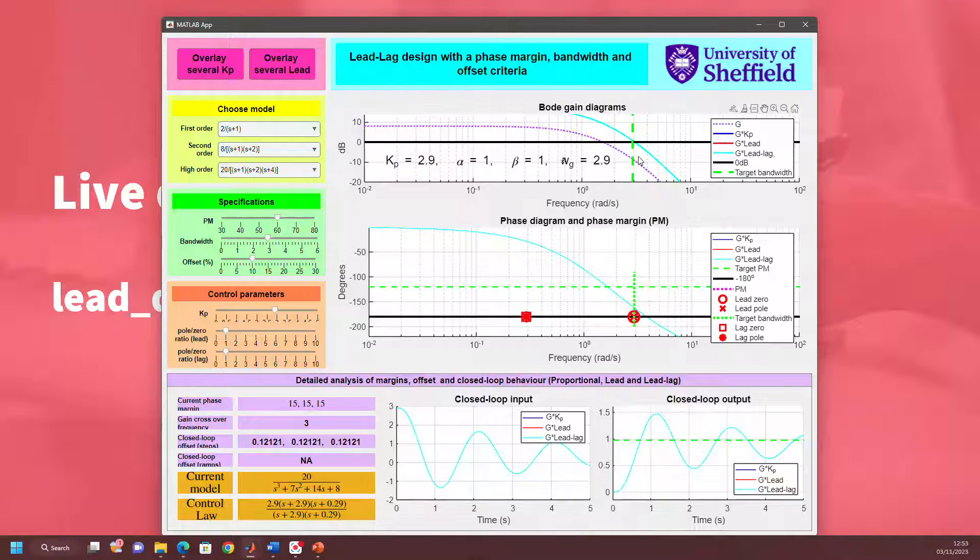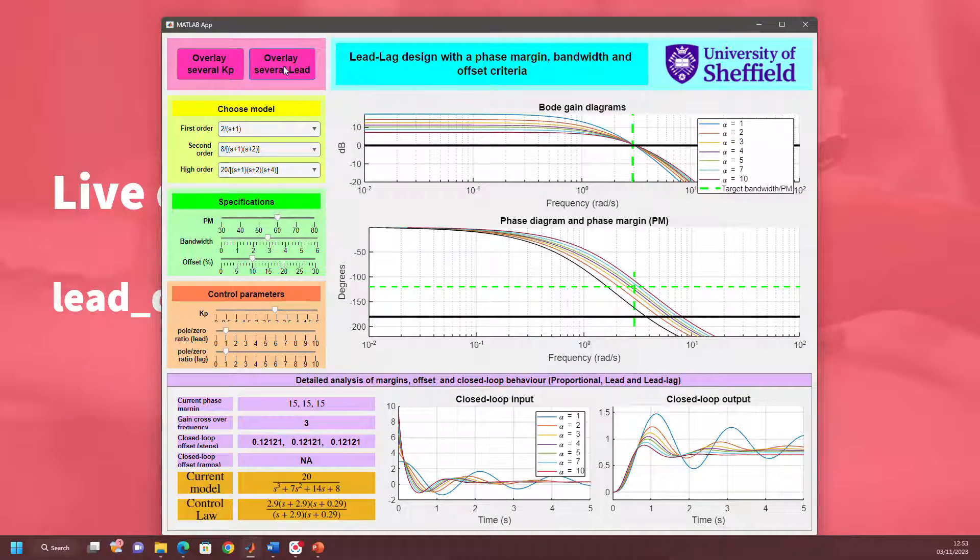You can see now that I have pretty much achieved the crossover frequency I want. The gain plot is going through zero decibels at the bandwidth I've requested. So that's step number one. Now I need to get my phase margin right. At the moment, the phase margin is awful. The phase margin is 15 degrees. I need to increase the phase. So let's see what sort of beta do I need for my lead. Let's overlay several lead.